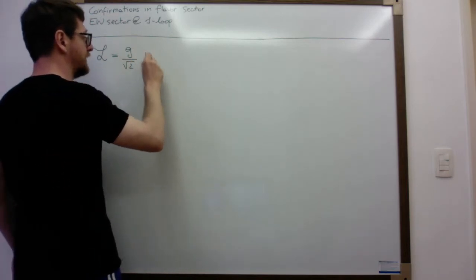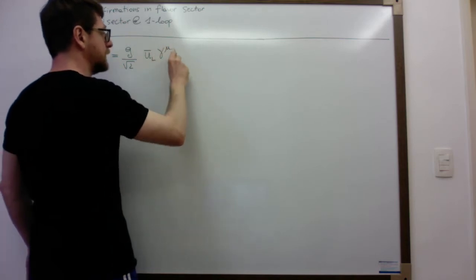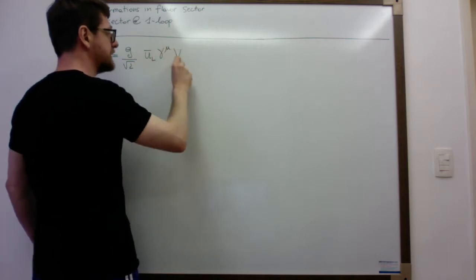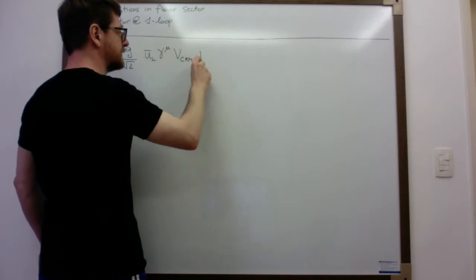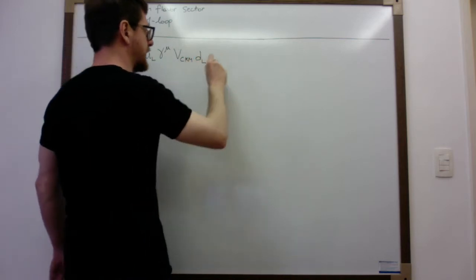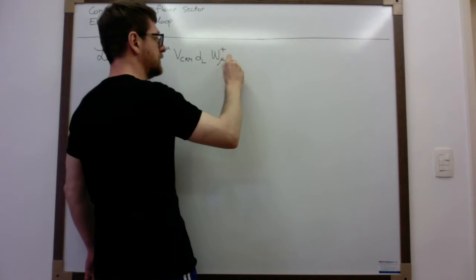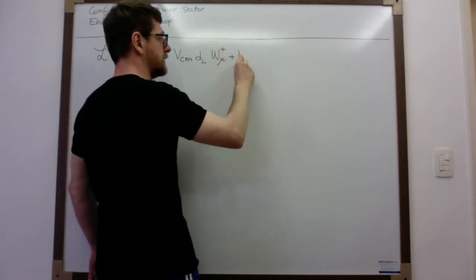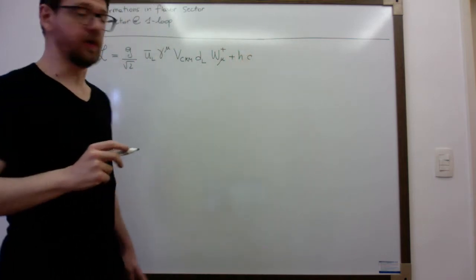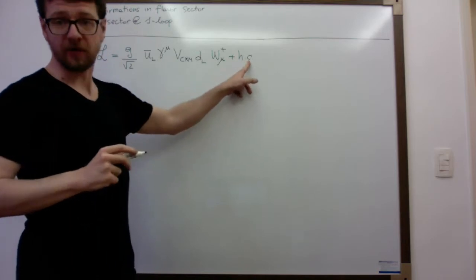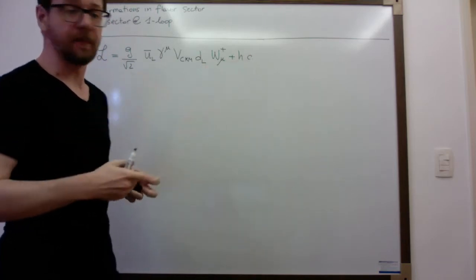And then we have U-left bar, gamma mu, the CKM matrix V_CKM, D-left, and here we have W-plus mu. And then we have the hermitian conjugate term, which involves the W-minus boson — simply the complex conjugate.